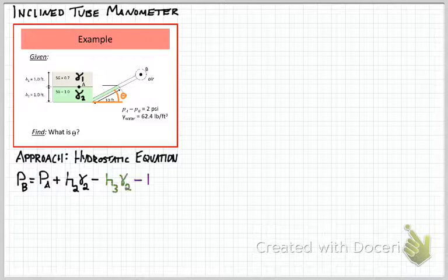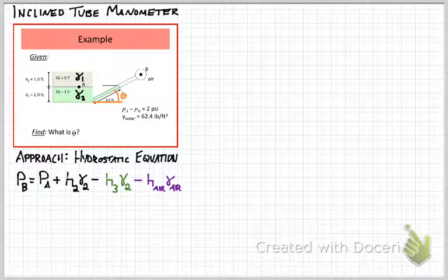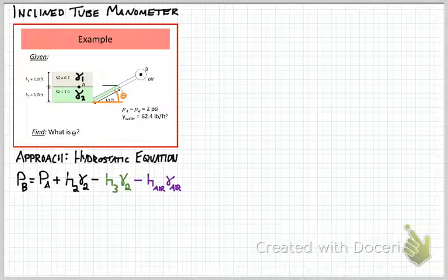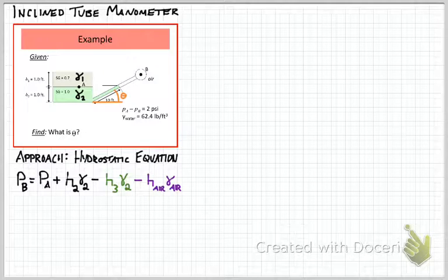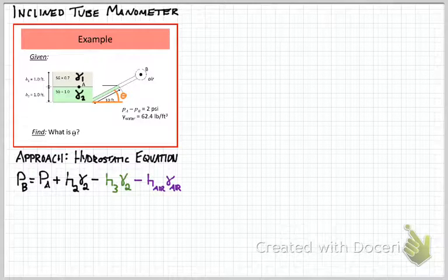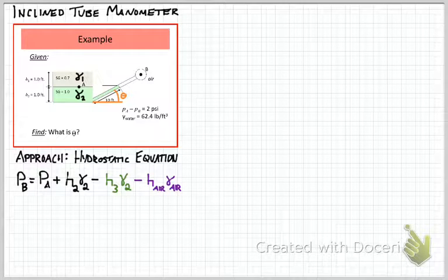In this case we can write our manometer equation looking something like this: pressure at B equals the pressure at A plus H2 times gamma 2, so we're moving down from point A to the bottom of the container in this case, minus H3 gamma 3, that's moving back up through the inclined tube manometer where the green fluid exists, and then we're moving up through the air a distance of h air, the vertical distance we move through that fluid.